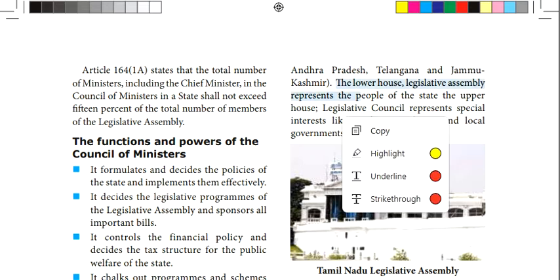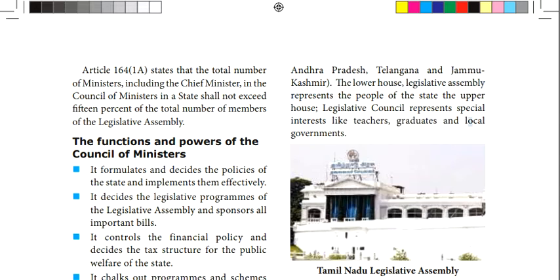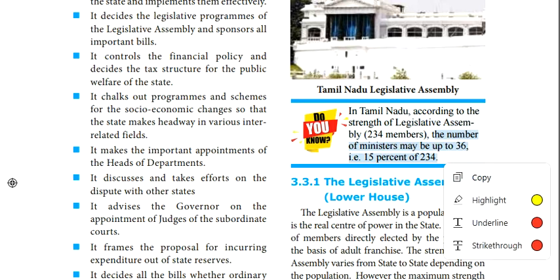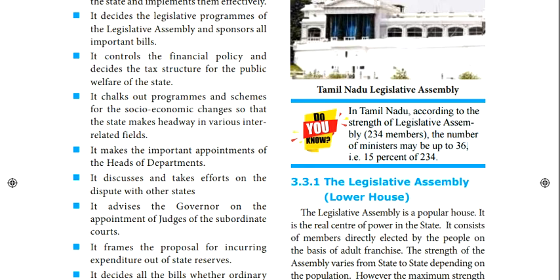The legislative assembly is the lower house, and the MLC is the upper house. The total strength of the legislative assembly of Tamil Nadu is 234 plus 1. One of them is the governor's appointment. The number of ministers is about 36.